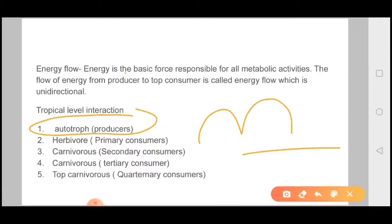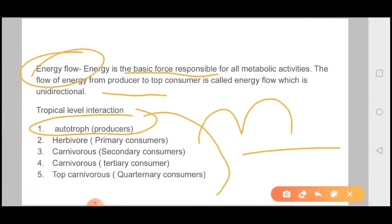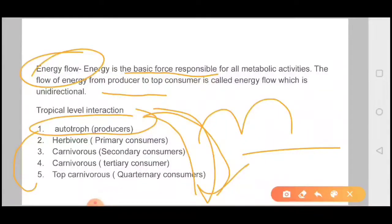Energy is the basic force responsible for all metabolic activities. The flow of energy from producers to top consumers is called energy flow, which is unidirectional. Remember that energy flow will always be unidirectional — from autotrophs upward — meaning energy flows always from lower to higher trophic levels.